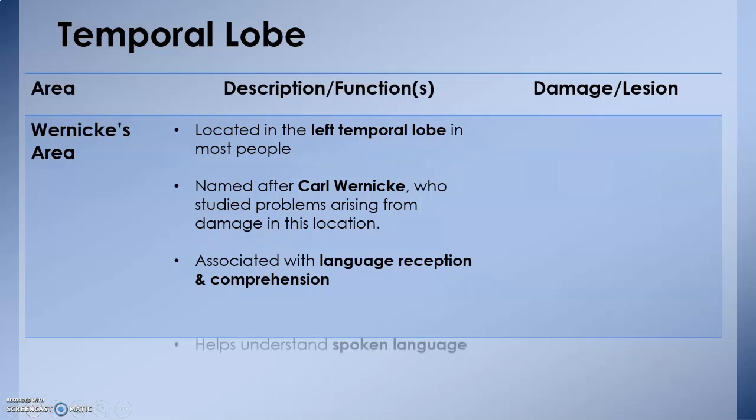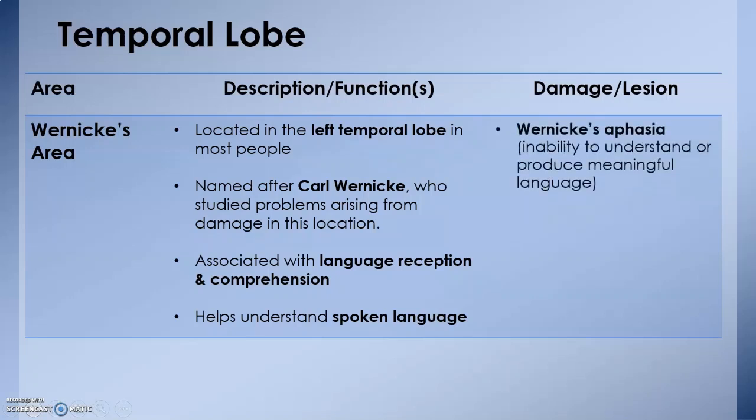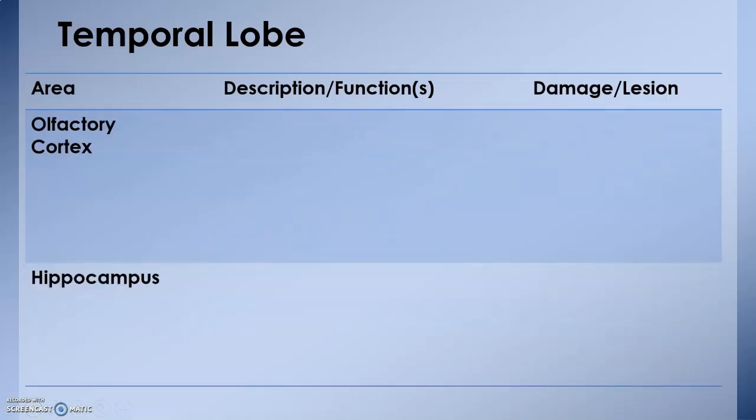What happens if this area is damaged? Damage can produce Wernicke's aphasia—inability to understand or produce meaningful language. You would be able to speak fluently, you may be able to pronounce the words correctly, but the words would be wrong. Why? Because the comprehension is the issue here.